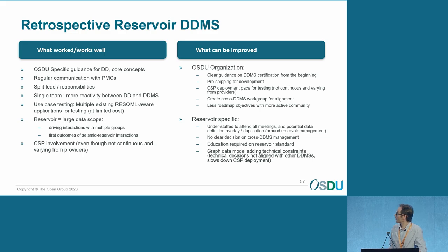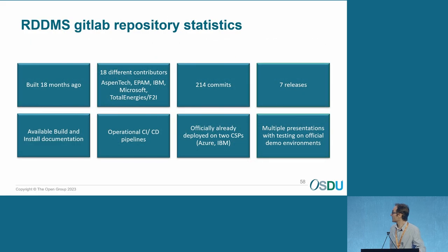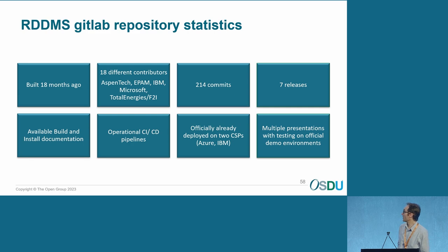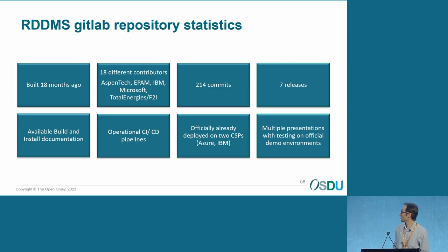In summary, that covers what worked well and what can be improved. As a final note, some statistics about the DDMS GitLab repository over the past 18 months: 18 different contributors, more than 200 commits, seven releases, available build and install documentation, operational CI/CD pipelines, officially deployed on two CSPs, and multiple presentations with testing on official demo environments. Thank you, and we're happy to discuss further during the break.